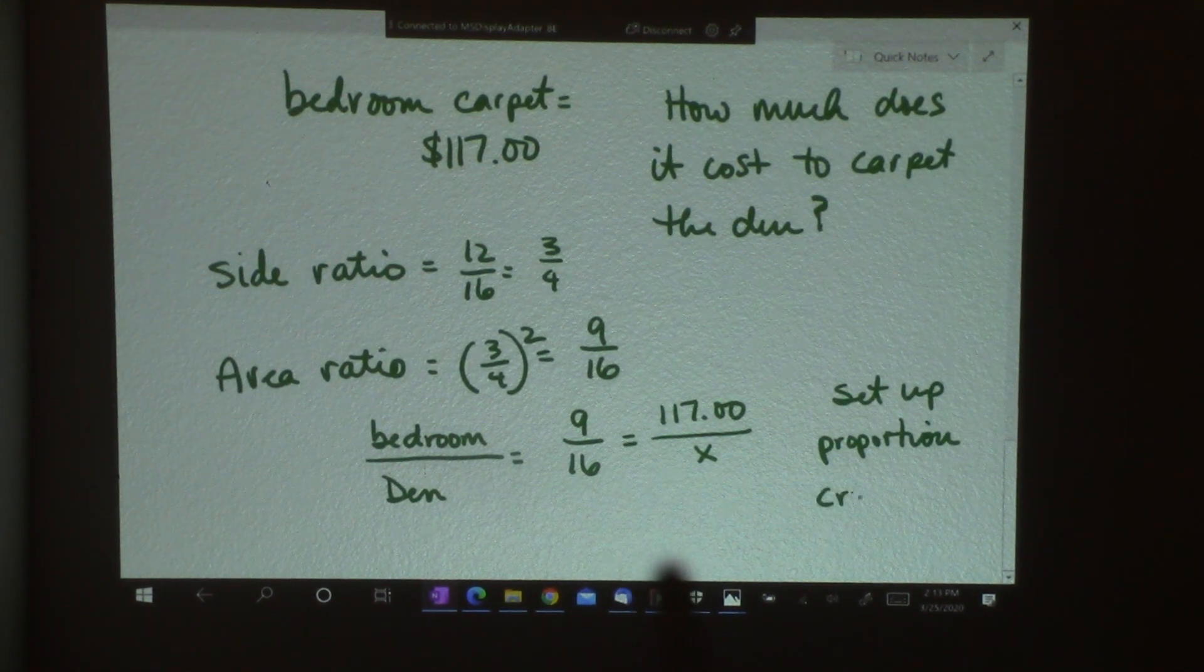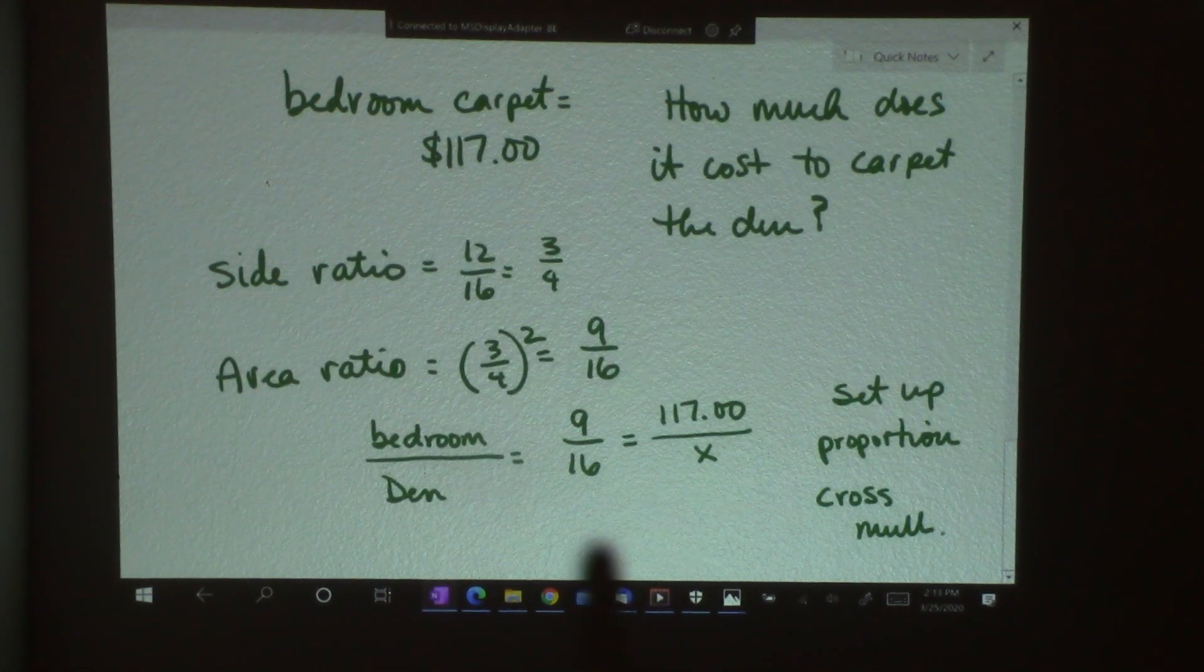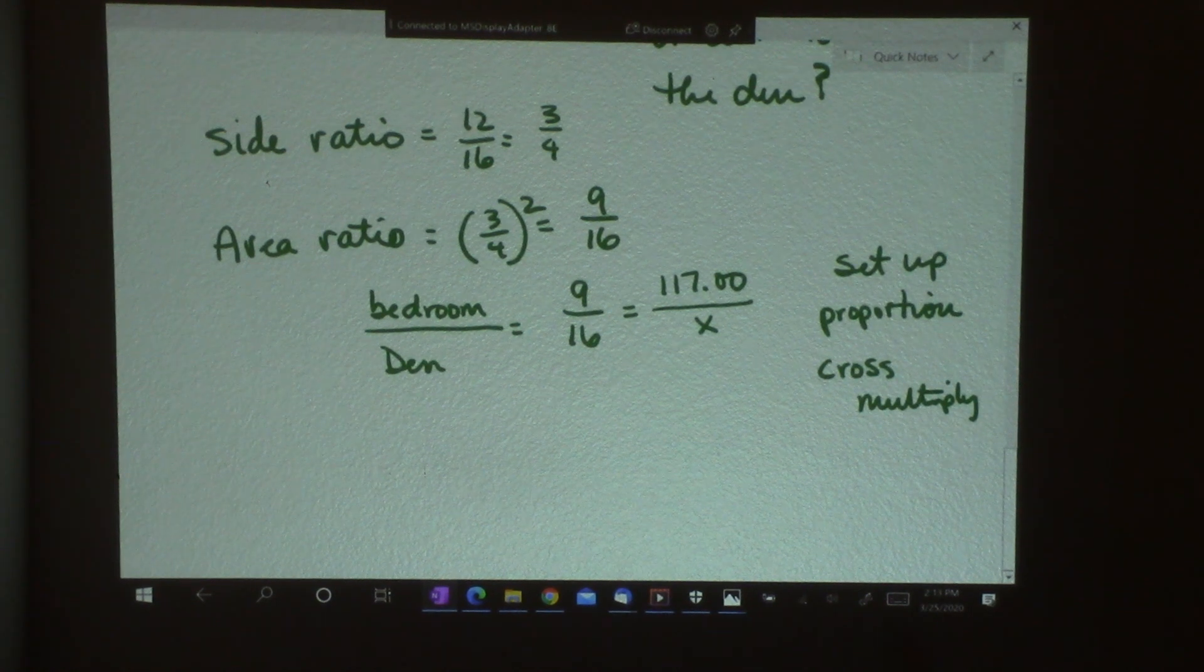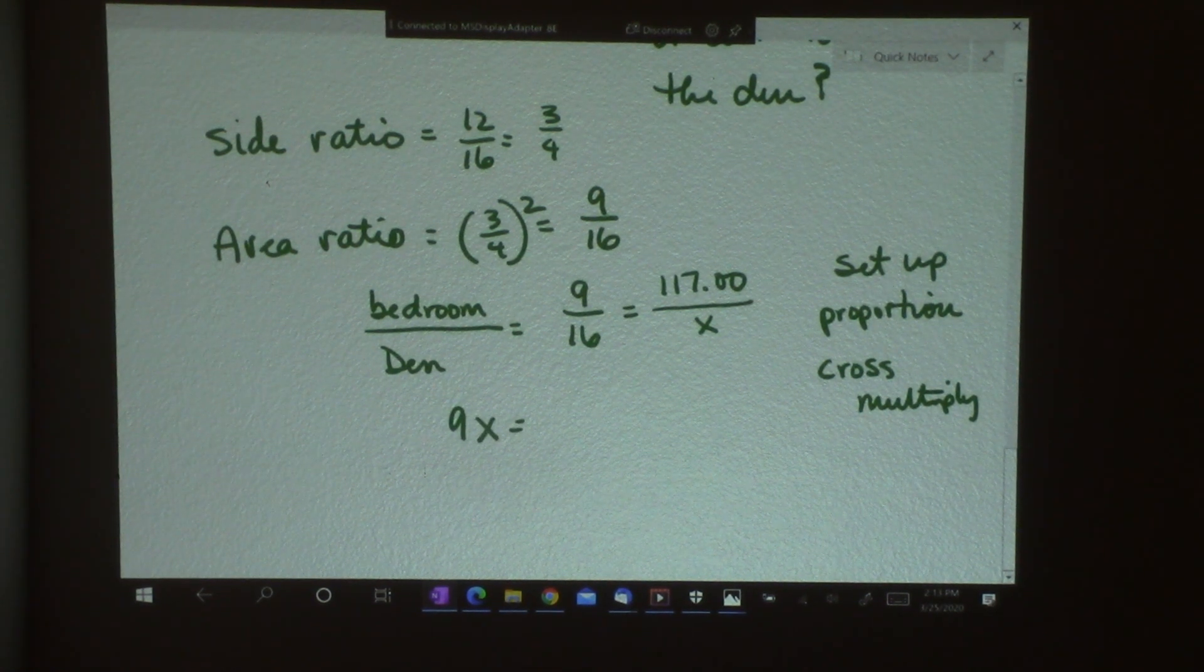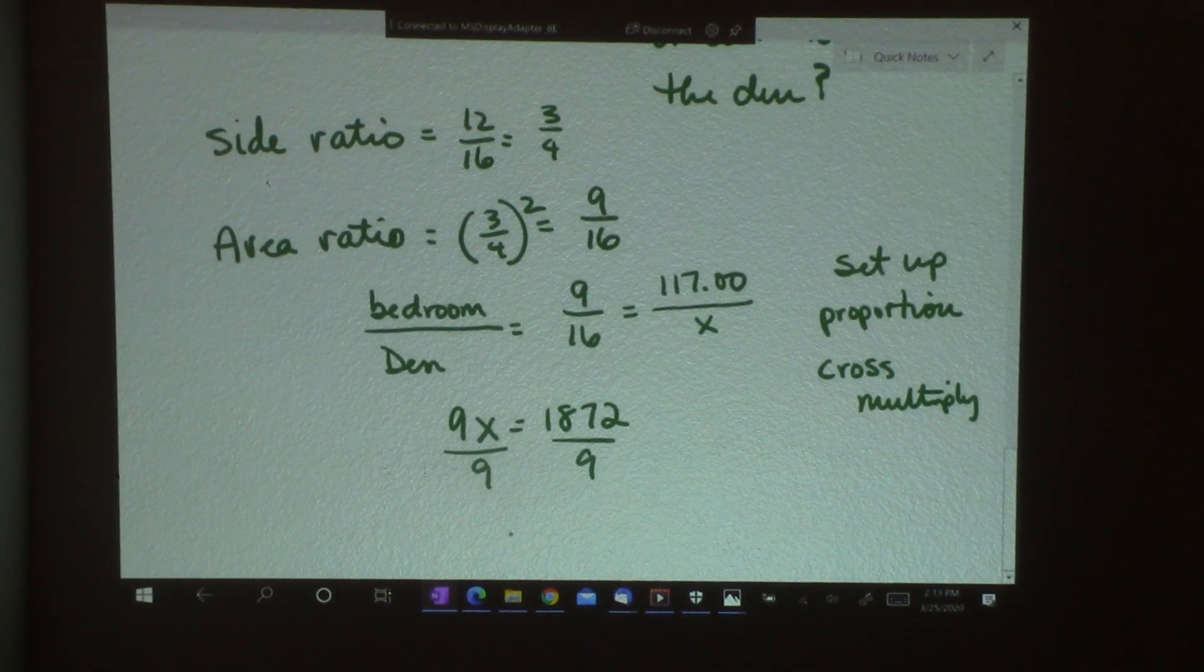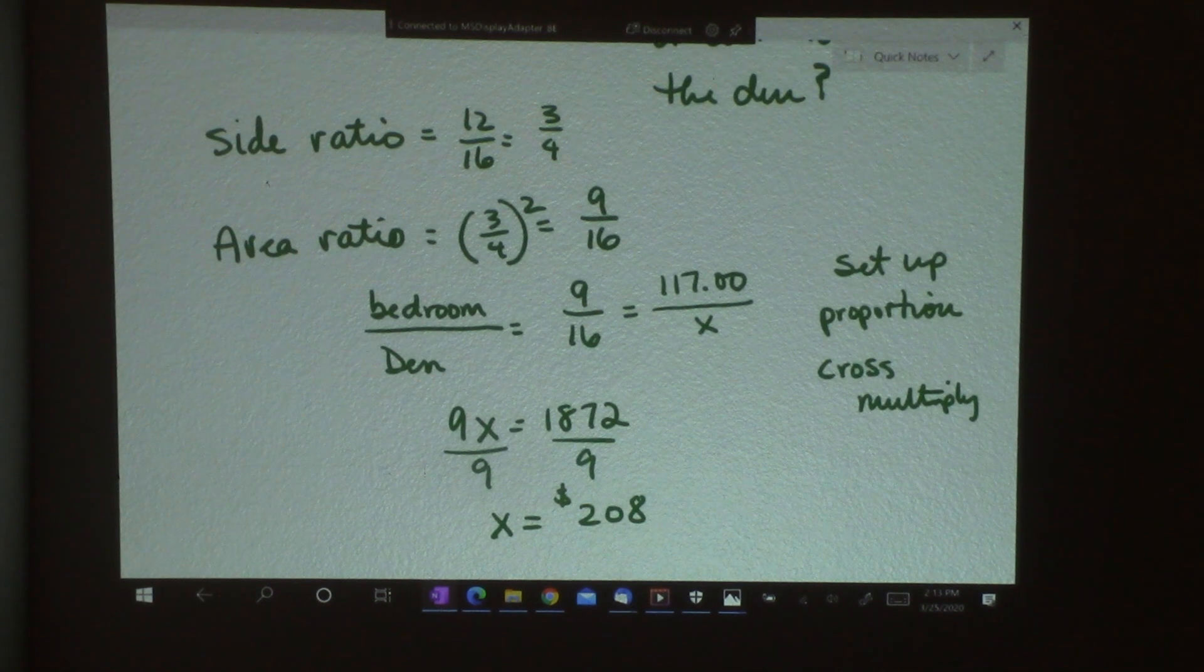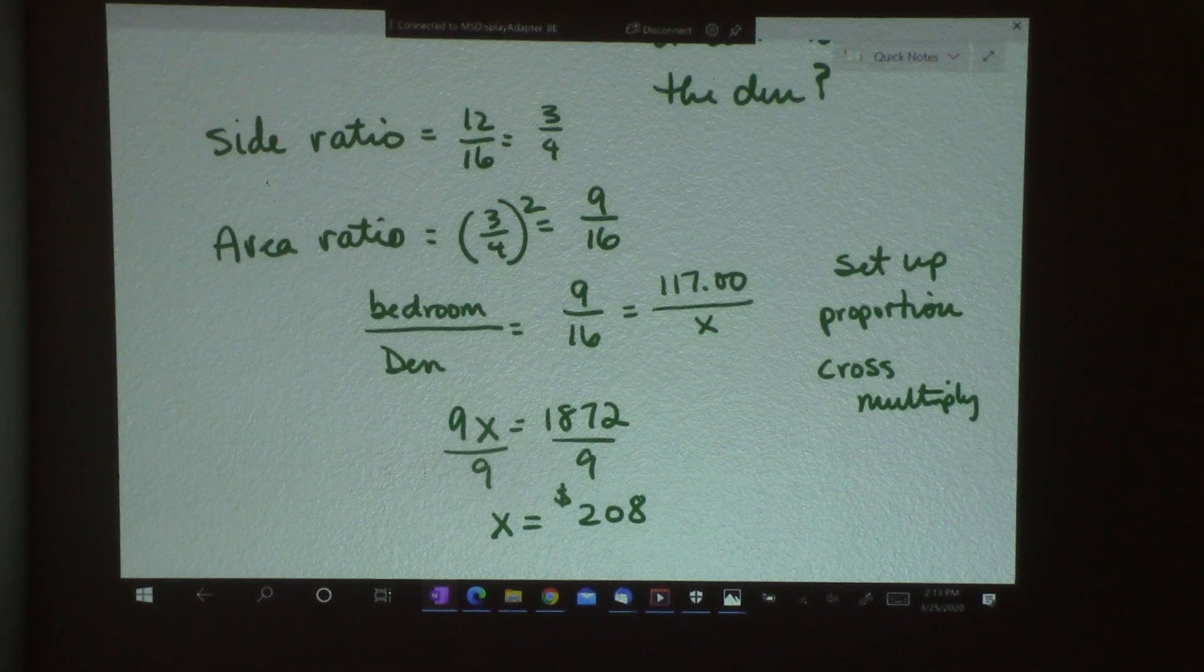I can just set up a proportion and cross multiply. So I'm going to do that. And I get 9x equals 16 times 117 is 1872. And I will divide by 9. And I get the cost is $208 for the den. Now that would be important when I'm trying to figure out how much I'm going to pay, how much I'm going to budget, can I afford it, all of that. So my answer is $208.